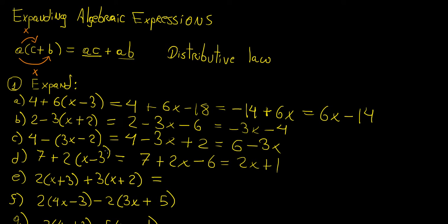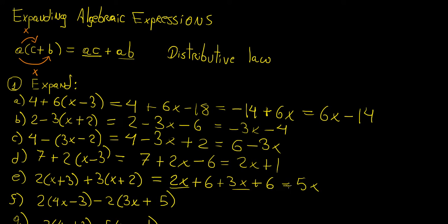In this example, we're going to have 2 times x, which is 2x, plus 2 times 3, which is 6. For the second bracket, we have plus 3 times x, which is 3x, plus 2 times 3, which is 6. Now we have like terms: 2x plus 3x is 5x, and 6 plus 6 is 12.